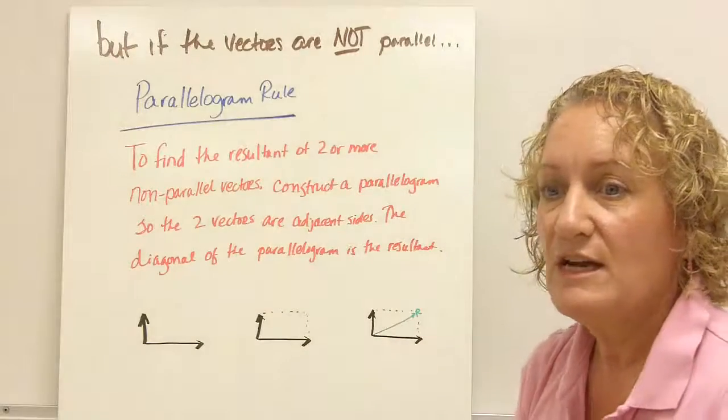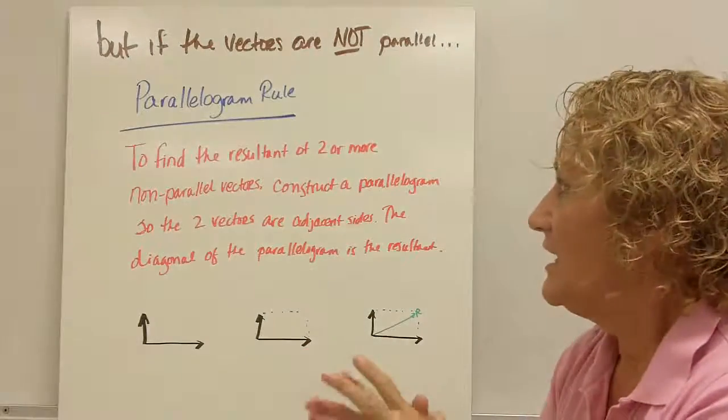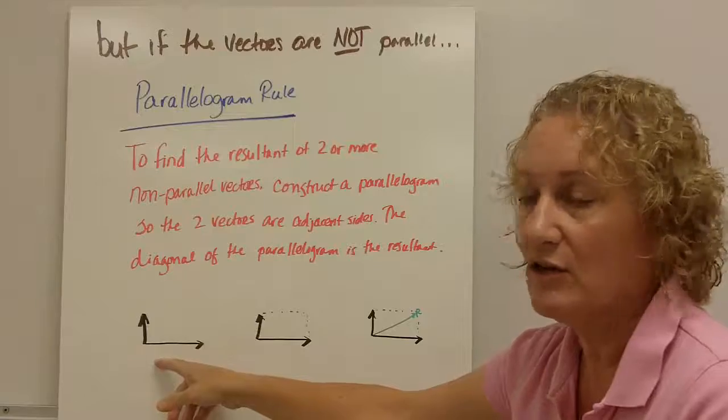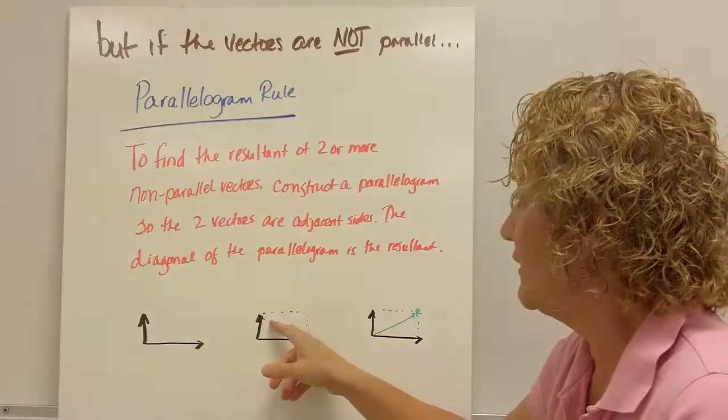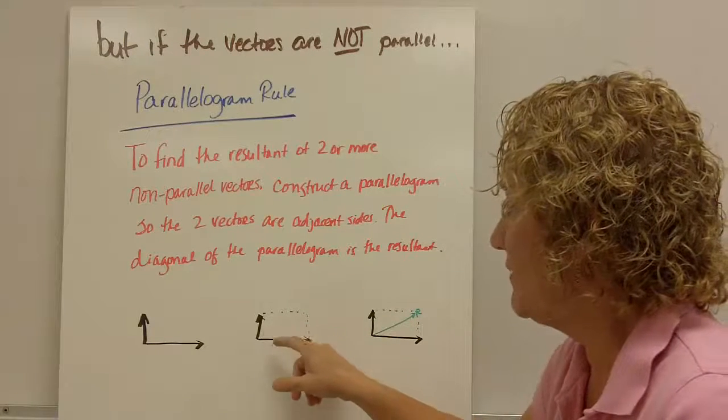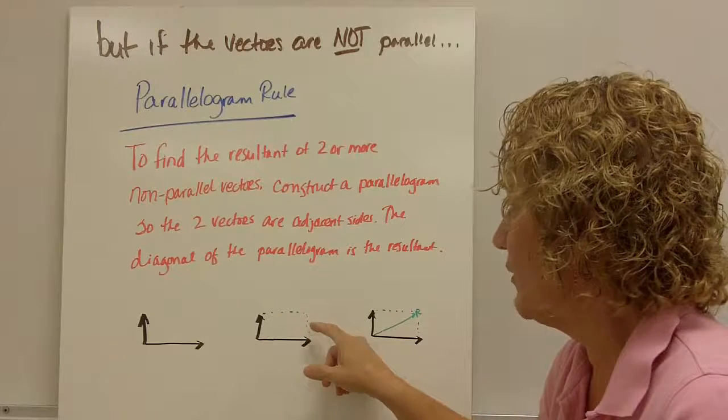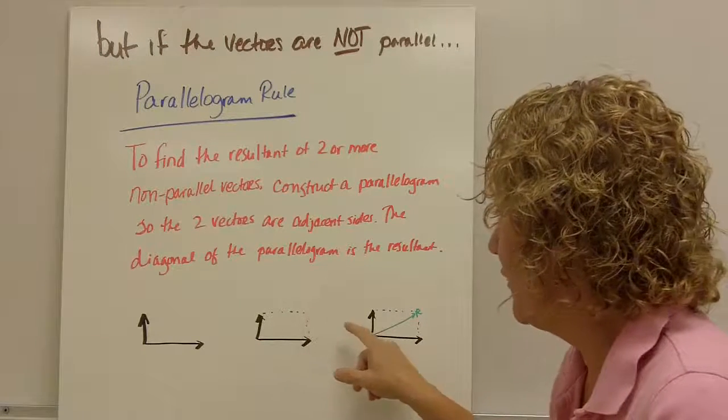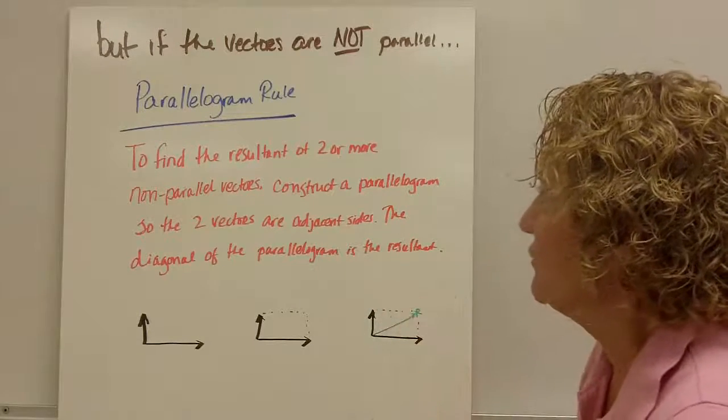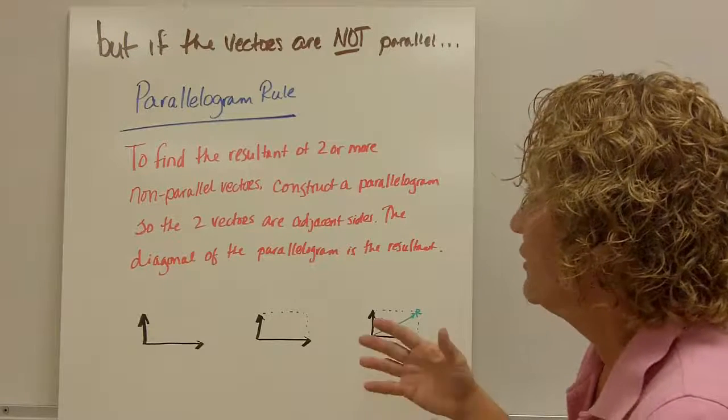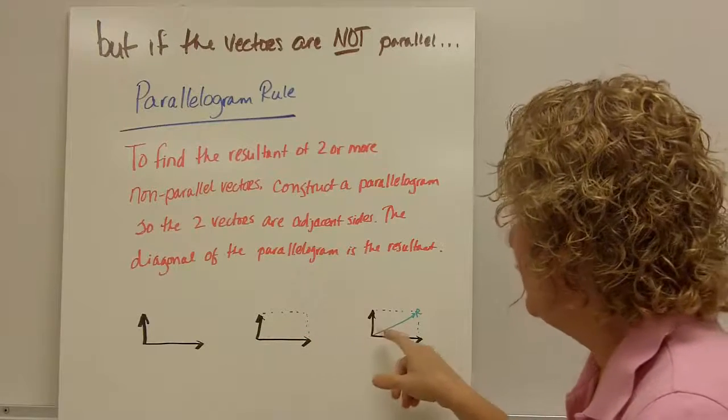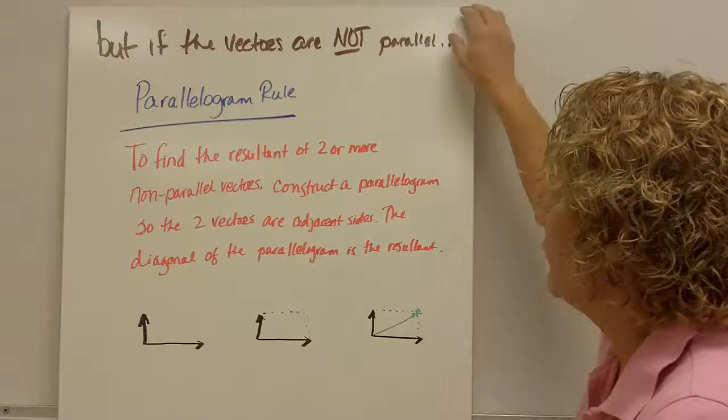The parallelogram rule basically says that if you're going to find the resultant vectors that are nonparallel, like these. Those aren't parallel. Those are perpendicular. You're going to actually form a parallelogram. So this top line is parallel to this one, and this line should be parallel to that one. My drawing isn't great, but let's pretend those are parallel. And then from where they join to the corner up here, that's your resultant. So in science terms, it says to find the resultant of two or more nonparallel vectors, construct a parallelogram so that the vectors are on adjacent sides, which means next to each other. The diagonal, which is the green line, of the parallelogram is the resultant.